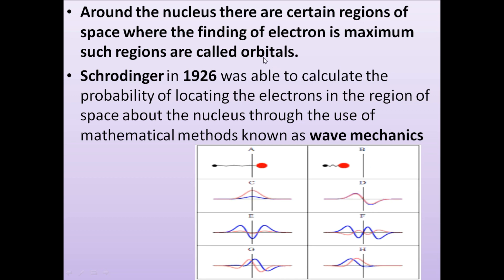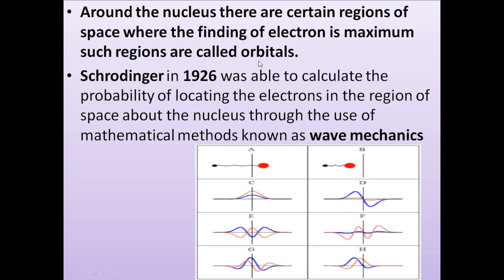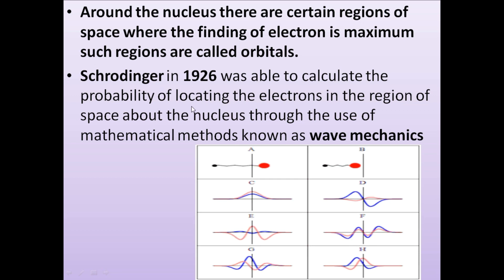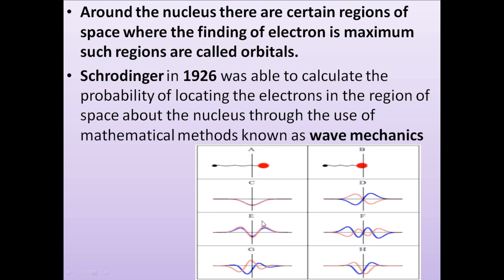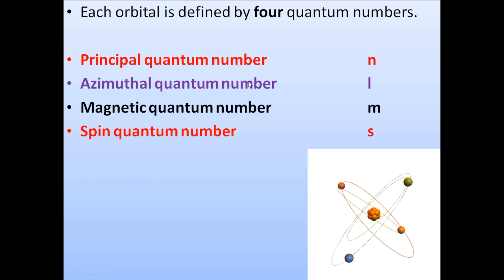The orbital is the space where we can locate the electron, or the space where there is a maximum probability of finding the electron — that is called the orbital. We can locate the electron in the orbital by the help of wave mechanics. That method was given by Schrödinger in 1926, which helped to locate the electron in the orbital. Using wave mechanics, we can easily locate it.